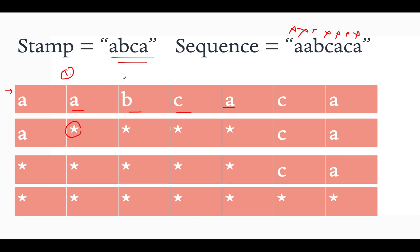As soon as I find that index, I will replace all the characters starting from that index up till the length of the stamp with an asterisk. This is because whatever value was held in the previous step, we will be able to replace it with 'abca' if we do stamping at this position in the last step. Now our string becomes 'a****ca'.